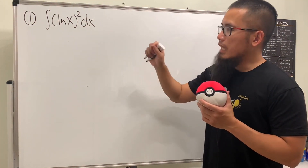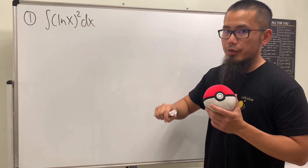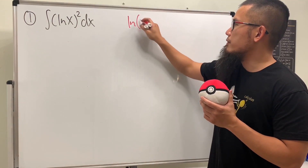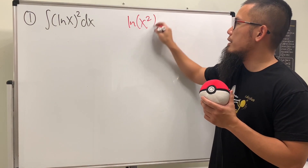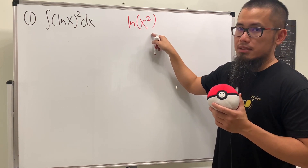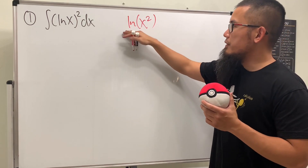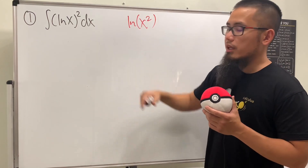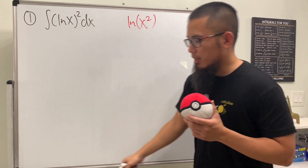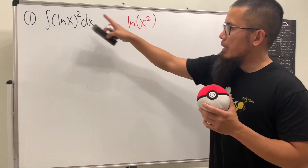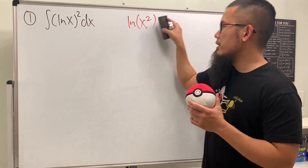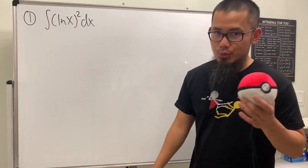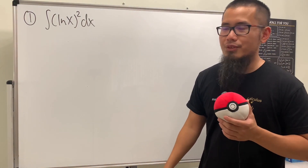This means ln x times ln x. This is not the same as ln of x squared, which means ln of x times x. If this is the question, yes, we can bring the 2 to the front and that will make the question slightly easier, but not this right here. So what do we do? Use substitution first.